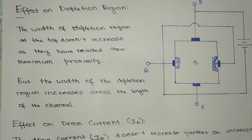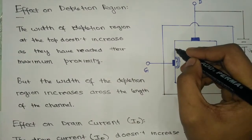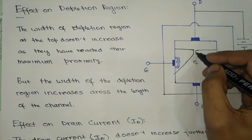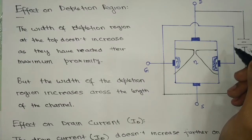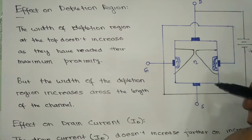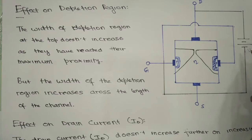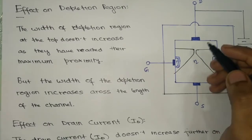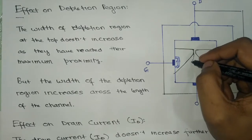We have seen before that if VDS, the potential between the drain and source terminal, is equal to the pinch-off voltage, then the depletion regions of both gate terminals come very close to each other. But they must not touch, because if they touch the potential drops. So what would happen if VDS is further increased? The depletion regions must not overlap each other at any cost — so along the length of the N-channel, the depletion region increases.